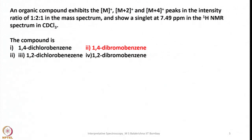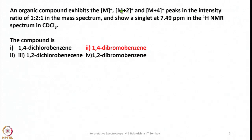You have 4 options: 1,2-dichlorobenzene; 1,4-dibromobenzene; 1,2-dichlorobenzene; and 1,2-dibromobenzene. When halogens such as chlorine and bromine are present, M+2 and M+4 peaks are expected. Without NMR data it may be difficult to identify the compound — all 4 could be anticipated. However, the 1H NMR shows only 1 signal.